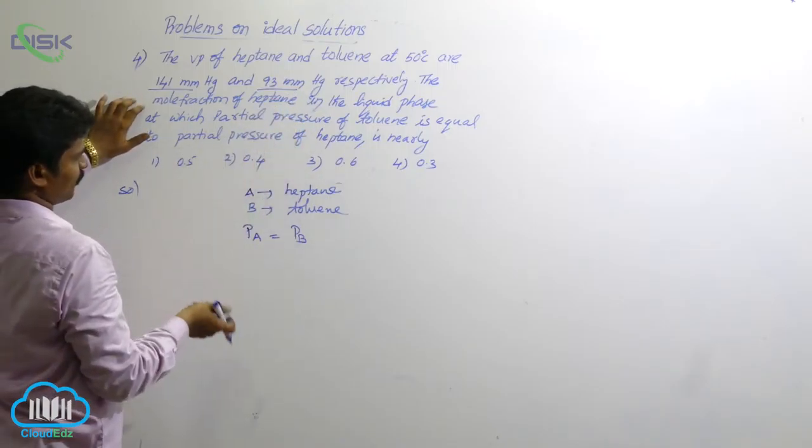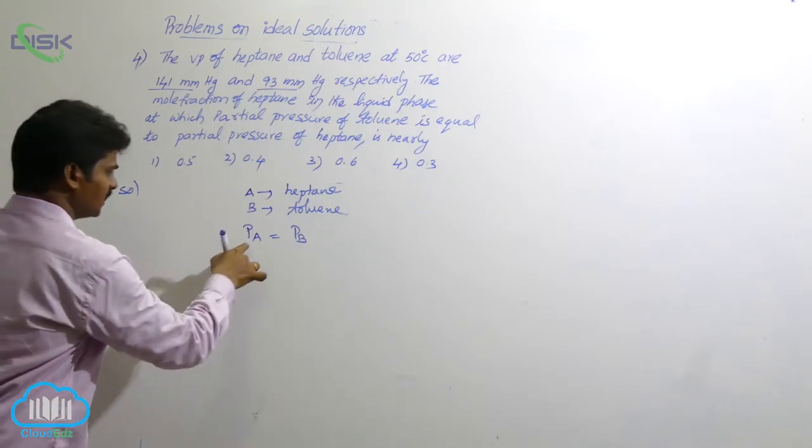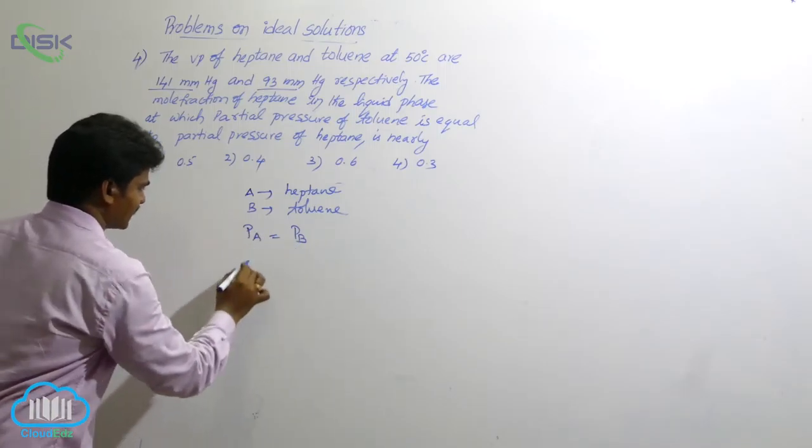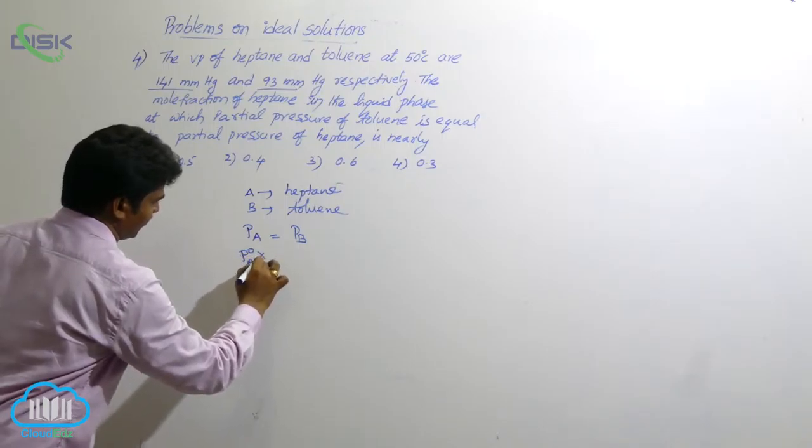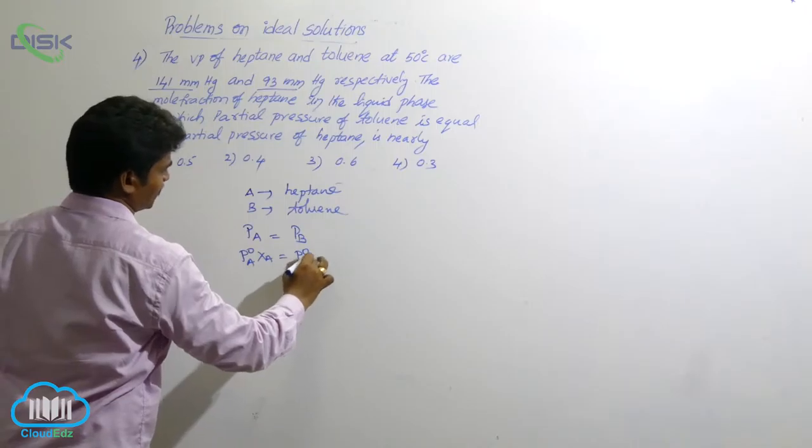So, liquid phase mole fraction of toluene. Further, see, Pa is equal to Pb. That means, P naught A, XA equals to P naught B, XB.